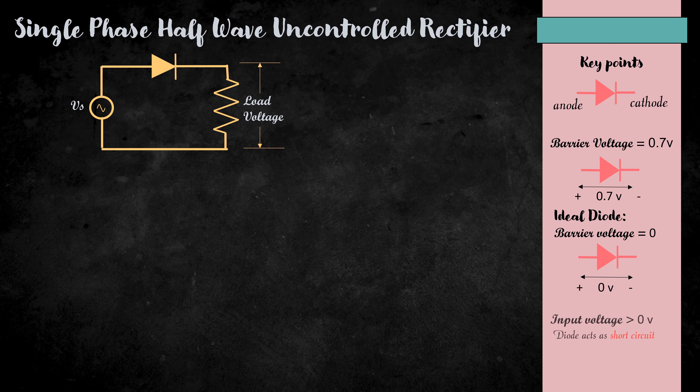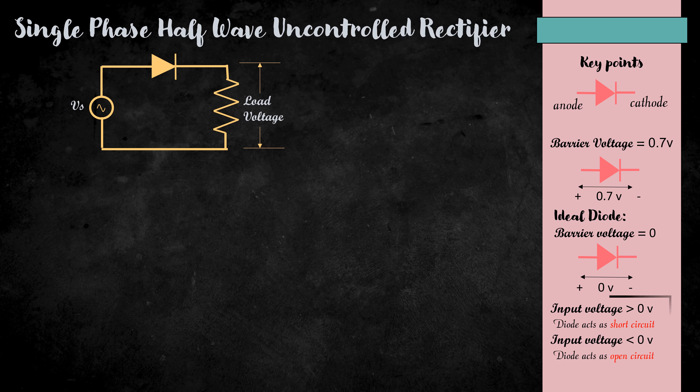Here, if the input voltage is greater than 0 volt, then the diode acts as a short circuit. And if the input voltage is less than 0 volt, then the diode acts as an open circuit. To know more about the diode, check my video on how does a diode work. I will post the link to the video in the description box below.